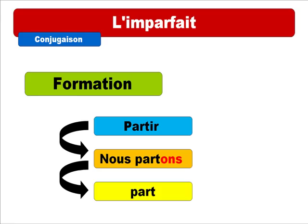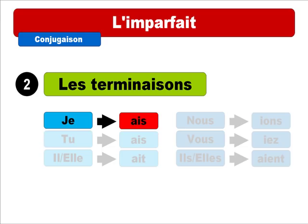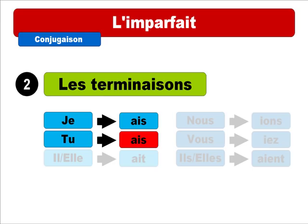Now we'll see the second part: the endings. For je, the ending is -AIS and you pronounce it like 'E' — an open sound, don't be afraid to open your mouth. The second ending for tu is also -AIS, same writing and same pronunciation: 'E.' The third ending for il is -AIT — instead of the S you get a T — but it's the same pronunciation: 'E,' because the T is silent.